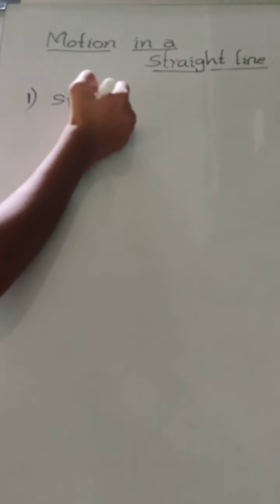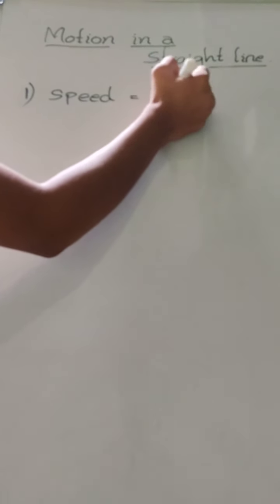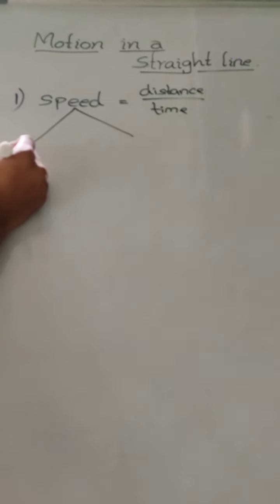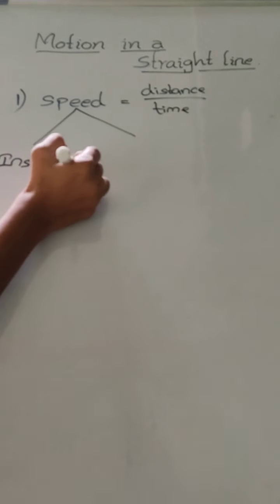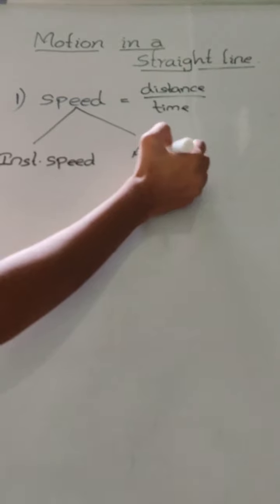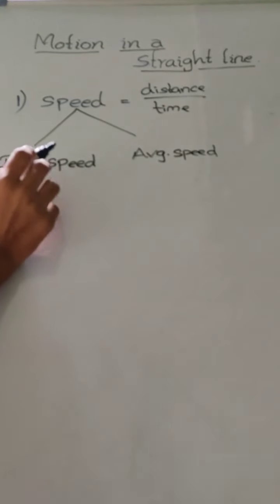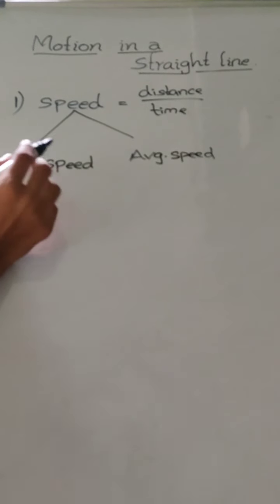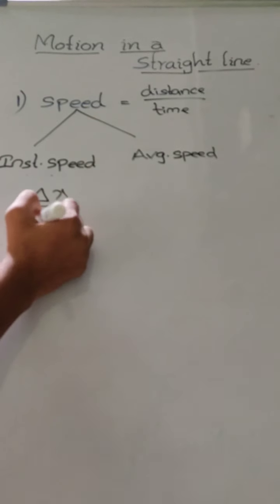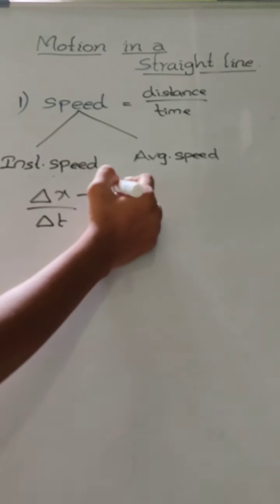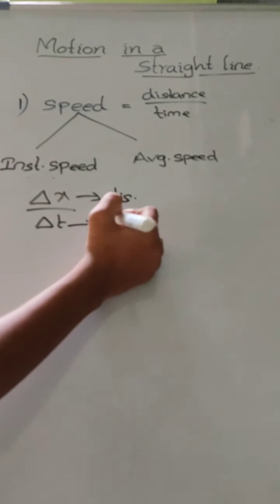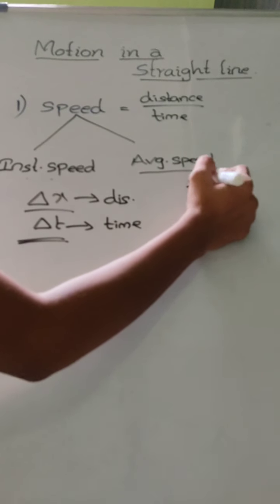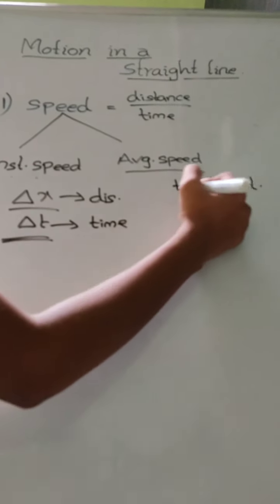First one is speed. The formula is: speed is equal to distance by time. There are two types: instantaneous speed and average speed. Instantaneous speed is the speed of a particle at a particular instant of time. The formula is delta x by delta t, where delta x represents the distance travelled and delta t represents the time interval. Average speed is equal to total distance by total time taken.